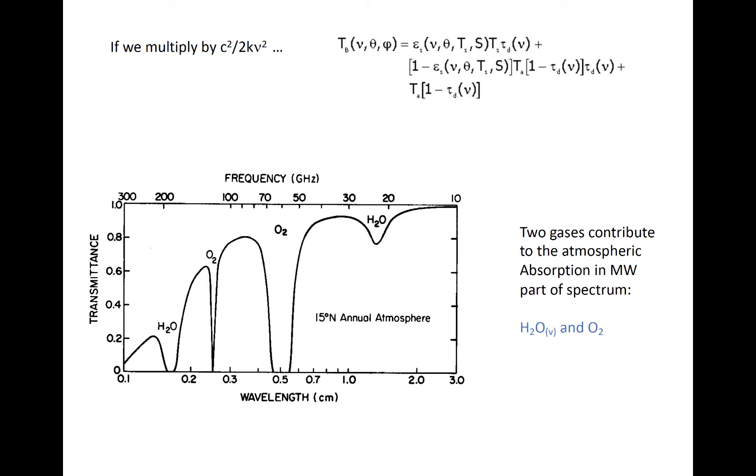The final term describes emissions from the atmosphere directly to space. Using the linearization that we worked through earlier, however, we can convert the radiances to temperatures, to express brightness temperature as parts of contributions from surface emissions, surface reflections, and atmospheric emissions.